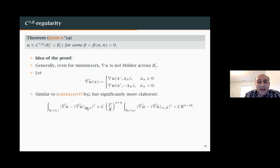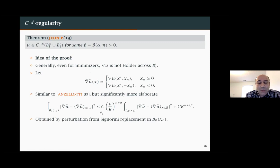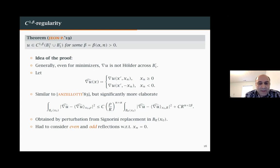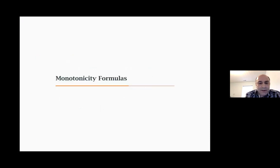What works is to look not at the gradient of U itself, but at the even extension of the gradient of U across the thin space. This quantity has the required Hölder regularity. We obtain this through Campanato space estimates, similar to Anzellotti, but requiring working with even and odd extensions — related to the two-valued harmonic function structure. One gets C^{1,β} regularity for each side of the thin space.